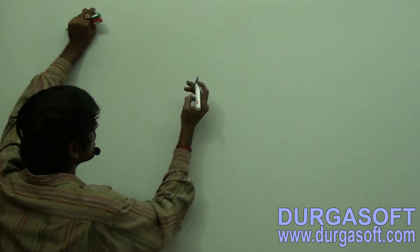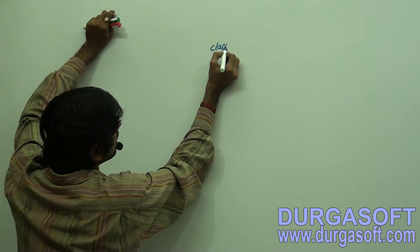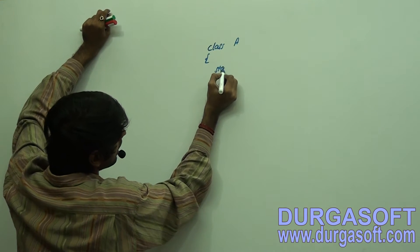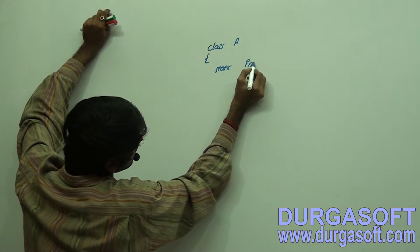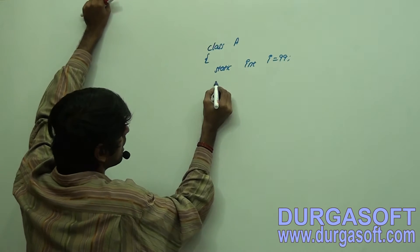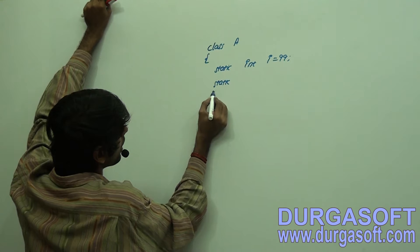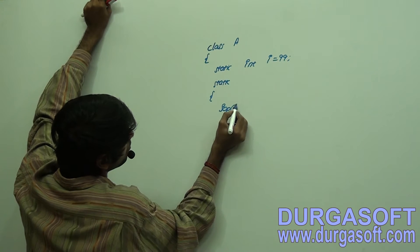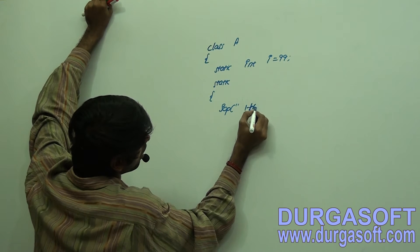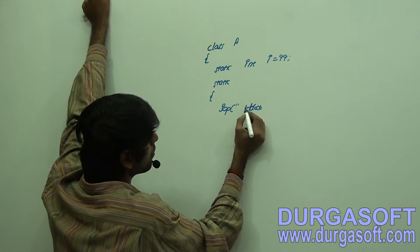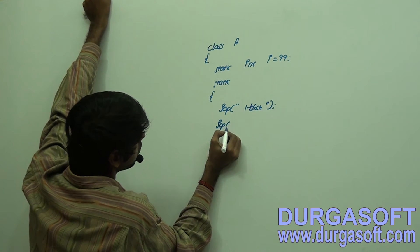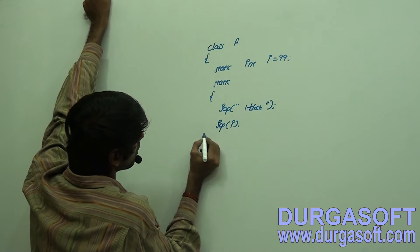Let me take one class — class A. Let me declare one static variable: static int i with a double-line assignment. Let me also take one static block. Inside the block, System.out.println for the first block, and then System.out.println of i.